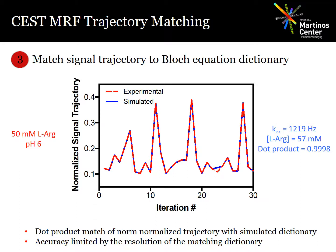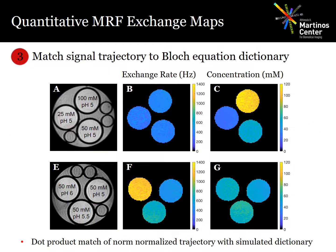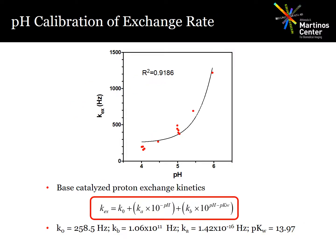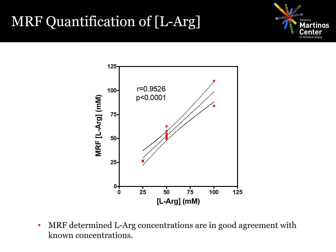One limitation with dictionary matching is that the accuracy is limited to whatever entries are in your dictionary. We tested the reconstruction in L-arginine phantoms that had either a fixed pH with varied concentrations, or a fixed concentration with varied pH. In both cases, CEST MRF correctly quantified both the chemical exchange rate and the L-arginine concentrations. We also quantified the agreement between the reconstructed parameters from CEST MRF and those from QUESP, which is an alternative exchange rate quantification method. The two methods had excellent agreement, and the dependence of the exchange rate on pH was well modeled by the base-catalyzed proton exchange model. Similarly, the concentrations obtained with MRF are significantly correlated with the known concentrations.